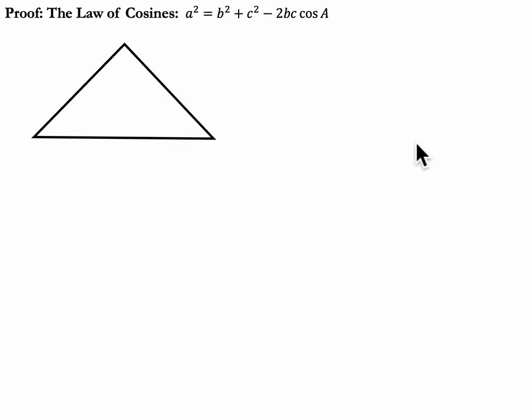So here's our triangle right here. Let's start with labeling. Let's label the corners A, B, and C. And let's label the sides across from those angles, or corners, a, b, and c. So that's our setup right there. Finally, let's just drop a perpendicular. That seems to always help. Let's call it h.